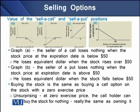As far as Graph B is concerned, we see that the seller of a put loses nothing when the stock price at the expiration date is above $50; he will lose only when the stock price falls below $50. The difference between Graph A and Graph B is that under Graph A, the holder will lose if the price rises above $50, whereas in Graph B, the holder of the put contract will lose if the price falls below $50. The loss under both contracts is equal to the similar amount of rise or fall.